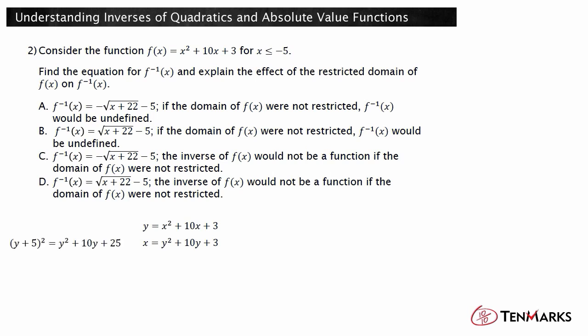Since y plus 5 squared is y squared plus 10y plus 25, add 22 to each side to form a perfect square trinomial. Factor the trinomial and take the square root of each side. For now, keep the square root as both positive and negative roots. Subtract 5 from each side. You almost have the inverse function — you just need to figure out whether the principal square root or negative square root is needed.